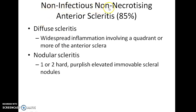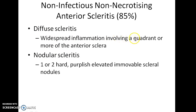Non-infectious non-necrotizing anterior scleritis is the most common type, accounting for 85% of all cases of scleritis. There are two types: diffuse scleritis and nodular scleritis. In the diffuse type, there is widespread inflammation involving a quadrant or more of the anterior sclera. In the nodular type, one or two hard purplish elevated immovable scleral nodules are seen.